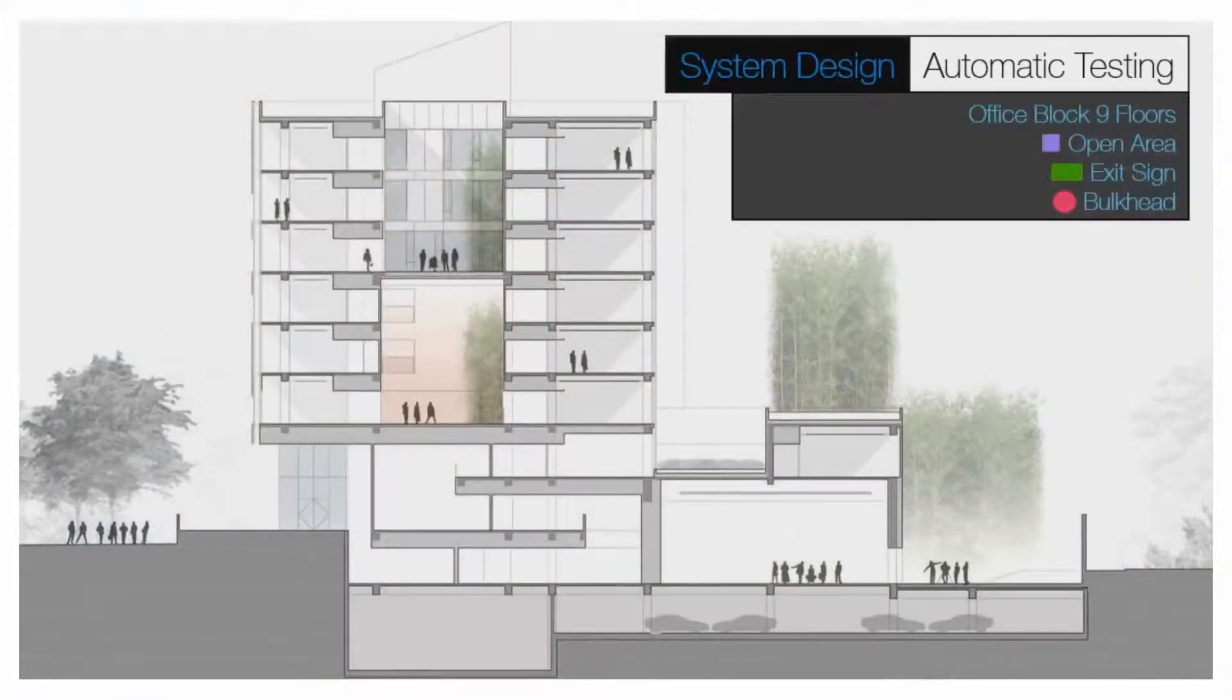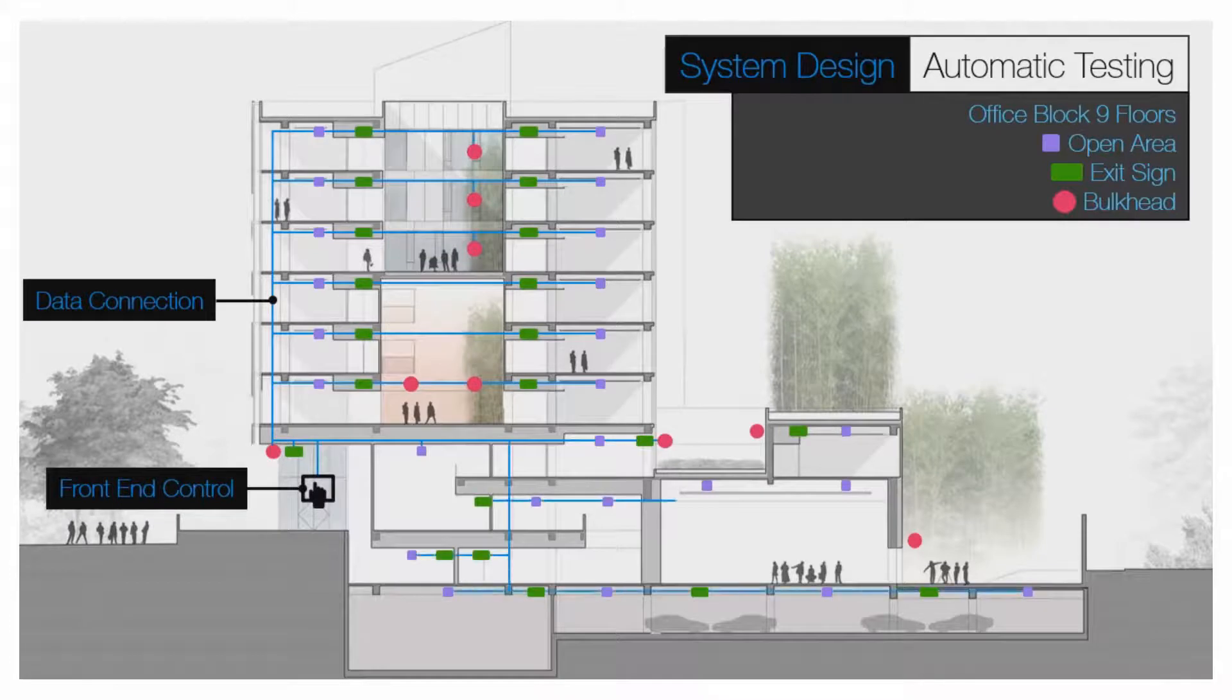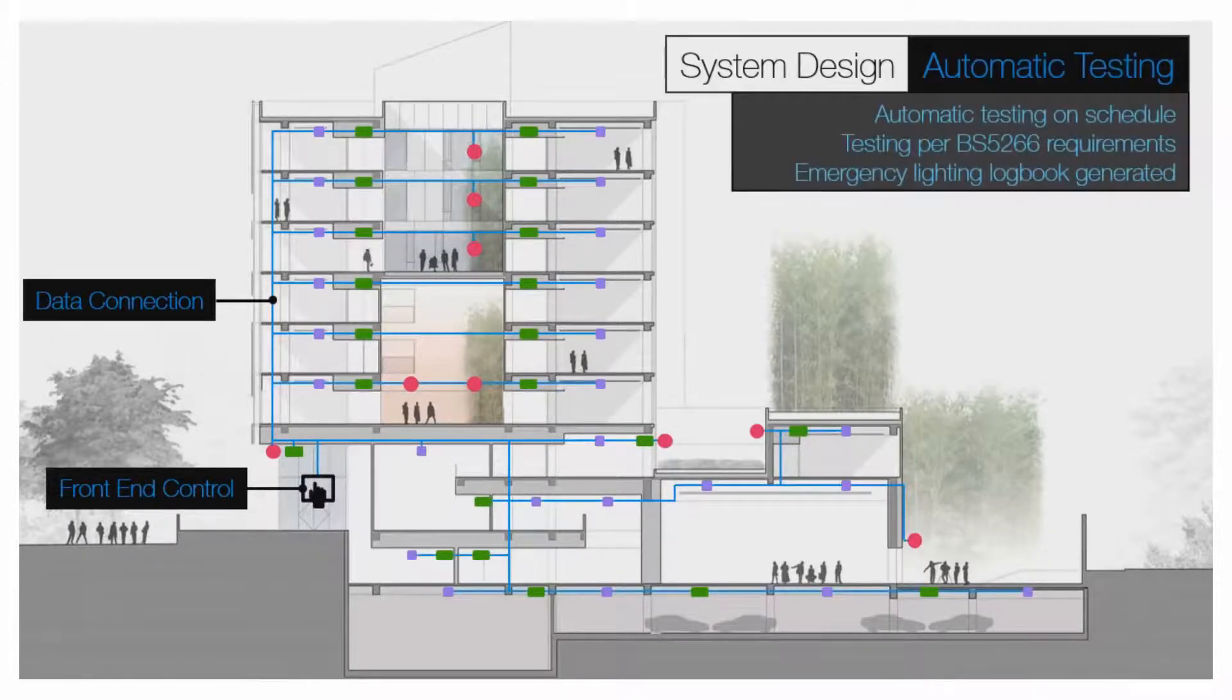Let's have a look at this emergency lighting system. With automatic testing, the luminaires are addressable and respond to instructions from a front-end control. A data connection to the luminaires allows the system to communicate and carry out the testing automatically. Complete records of test data are retained in a format that complies with the BS 5266 testing requirements. This can be presented to the fire authorities for inspection.